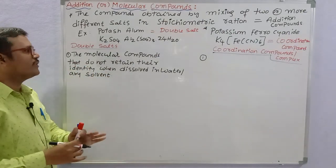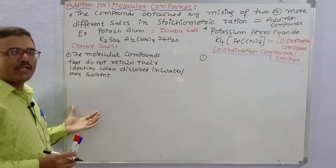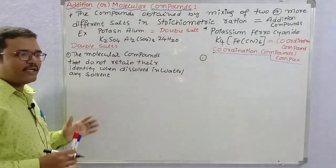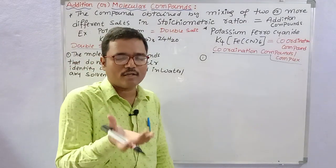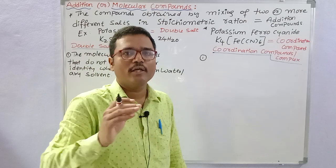Double salts are stable only in the solid state. When in solid salt form, they are stable. But when dissolved in water or any solvent, they lose their stability and break apart into ions.